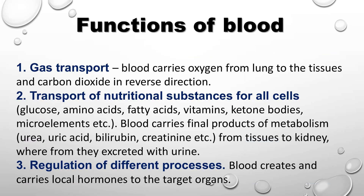Blood's main function is gas transport, carrying oxygen from lungs to tissue and carbon dioxide in the reverse direction. It transports nutrient substances such as glucose, amino acids, fatty acids, vitamins, ketones, and micro-elements. Blood also carries final products of metabolism like urea, uric acid, bilirubin, and creatinine from tissue to the kidney, where they are excreted as urine.